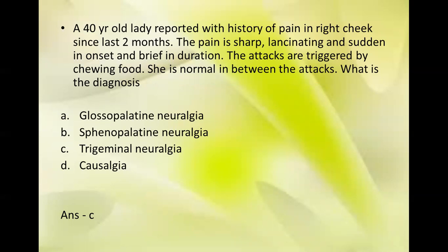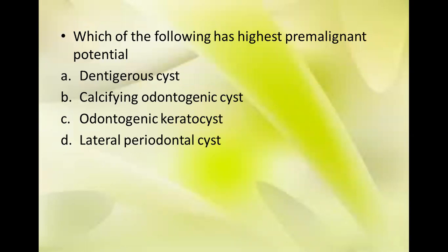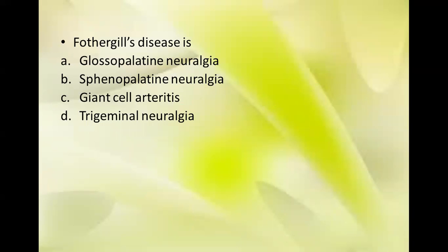Trigeminal neuralgia is characterized by sharp, lancinating pain that is sudden in onset and triggered by chewing — it has triggering factors. The next question: which of the following has the highest pre-malignant potential? Options: dentigerous cyst, calcifying odontogenic cyst, odontogenic keratocyst, and lateral periodontal cyst. The answer is odontogenic keratocyst.